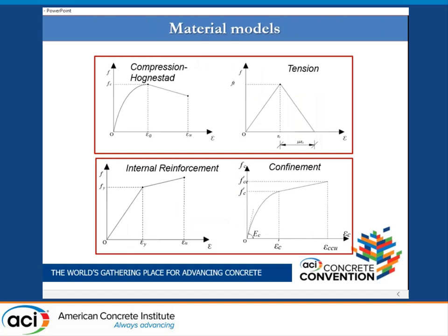The material models adopted are reported in this slide. The constitutive law of compressed concrete was modelled using the proposal from Hognestad. The tensile cracking was modelled with a linear elastic branch until the tensile strength of concrete, followed by a descending linear branch. The longitudinal bars and stirrups were modelled with a bilinear hardening branch. The confinement parts are modelled with the constitutive law of confined compressive concrete proposed from ACI 549.